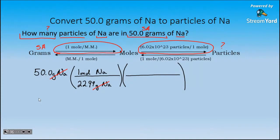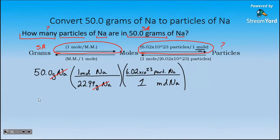It's much easier to string it together and do it all at once in the calculator. So in my second step, I want moles to cancel — that means in the denominator of the second step I need moles, as the roadmap shows. In my numerator, I have Avogadro's number of particles of Na. This question could read 'how many atoms of sodium,' but we'll use the generic term 'particles.' After the second step, the moles of sodium from the first step cancel the moles of sodium in the second step's denominator, leaving only particles of sodium.